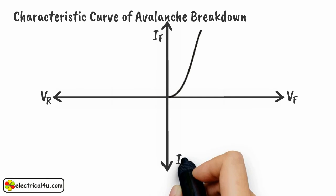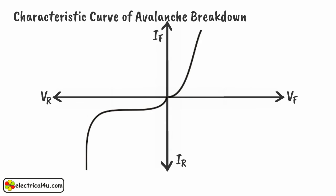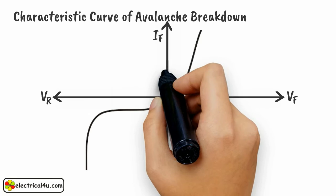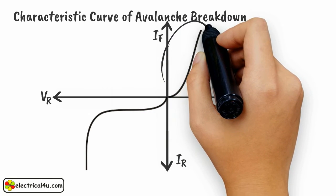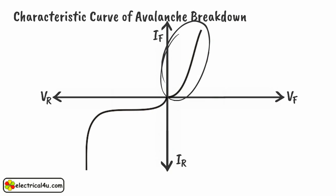This portion of the curve shows the characteristic of reverse bias condition. It is clear that the current through the semiconductor rises with an increase in the magnitude of the applied voltage when the PN junction is forward biased.